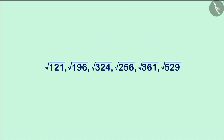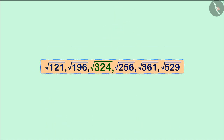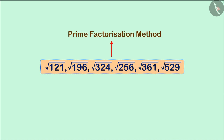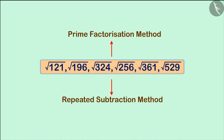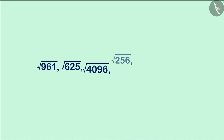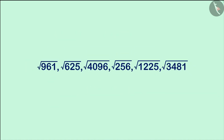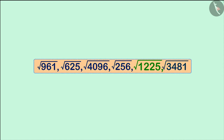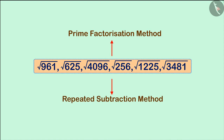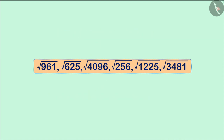Now look at these perfect square numbers. We can find the square root of these numbers by the method of prime factorization or the repeated subtraction method. If we use these two methods to find the square root of such large whole square numbers, it will be difficult and take a lot of time. But we can solve this easily by the division method.